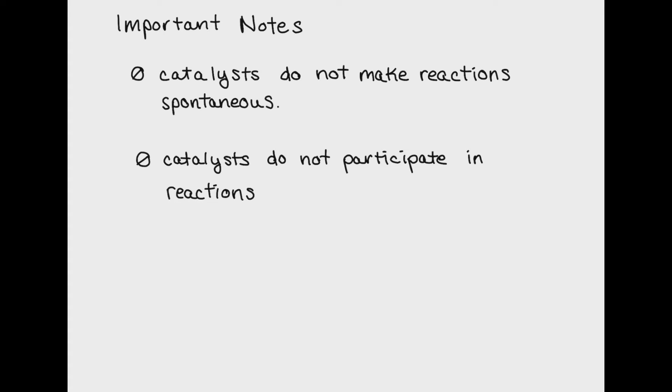A catalyst can make a reaction occur on a more biologically relevant timescale. What I mean by this is that if a reaction typically takes a hundred years for it to occur, a catalyst could make it occur in, say, a year or so. This is just an example. How quickly a catalyst works depends on the reaction and the catalyst.